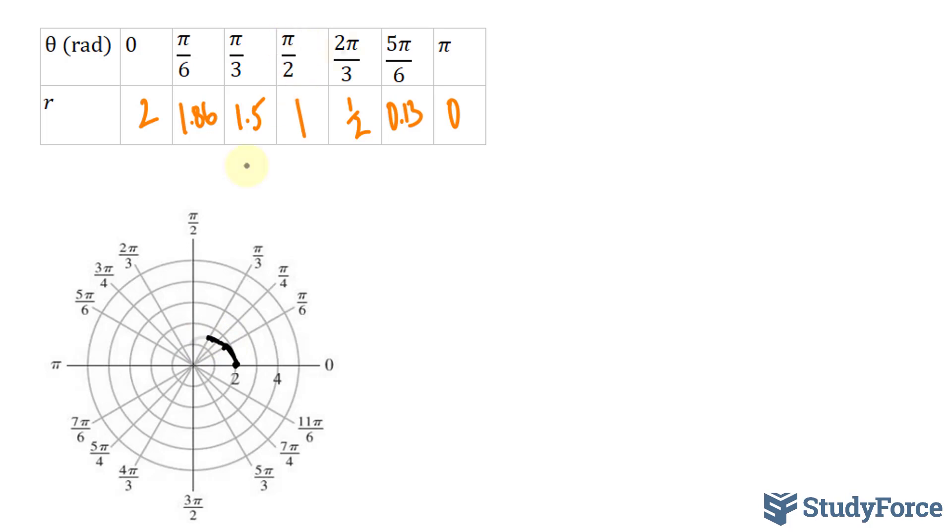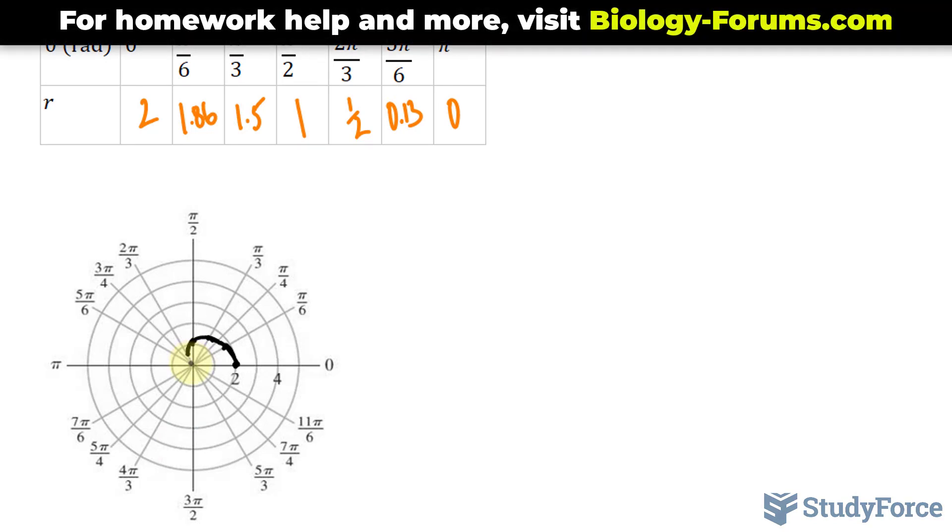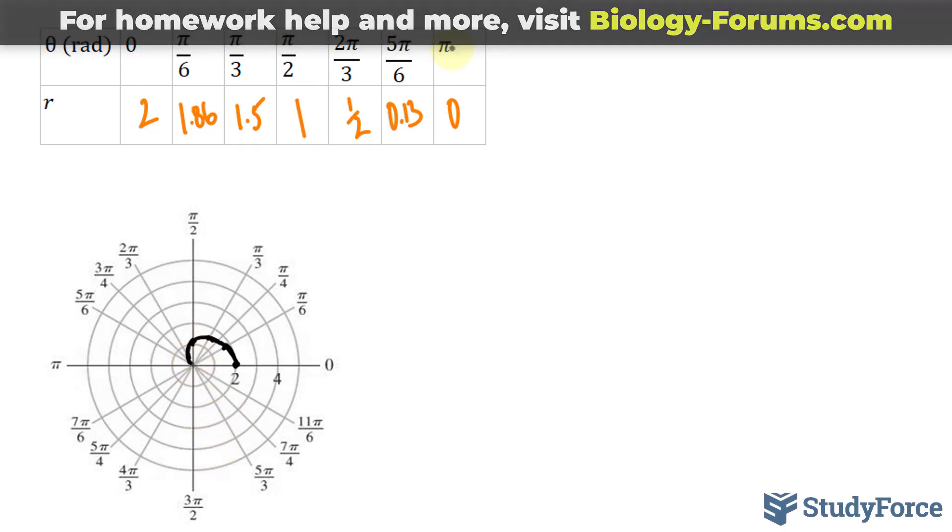Pi over 2 is 1, and then 2 pi over 3 is 1.5, which means that in this ray it should be right here. Notice that it's in between the two rings. 5 pi over 6 is 0.13. It's going to be hard to represent in the scale that I have. And then at pi, we have 0.